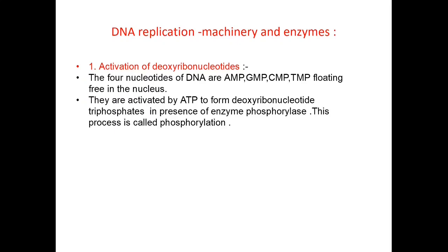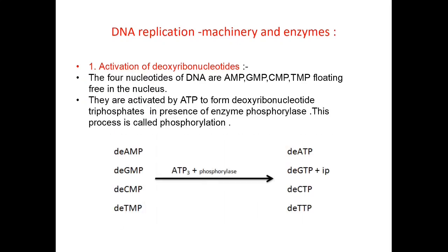This process is called phosphorylation. Each of the four deoxyribonucleotide monophosphates — dAMP, dGMP, dCMP, and dTMP — is provided energy by ATP in the presence of the enzyme phosphorylase and activated to form the corresponding deoxyribonucleotide triphosphates. These activated deoxyribonucleotide triphosphates then take part in the further process of DNA replication.